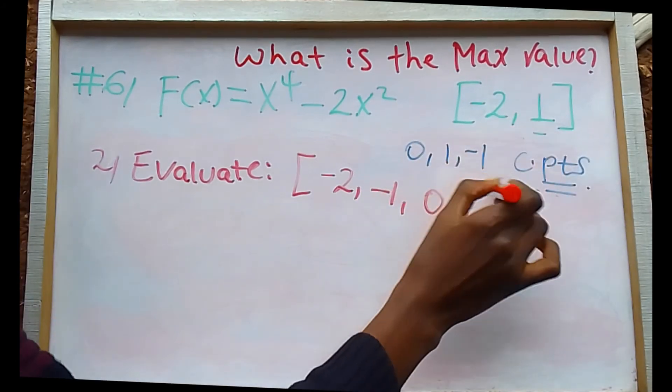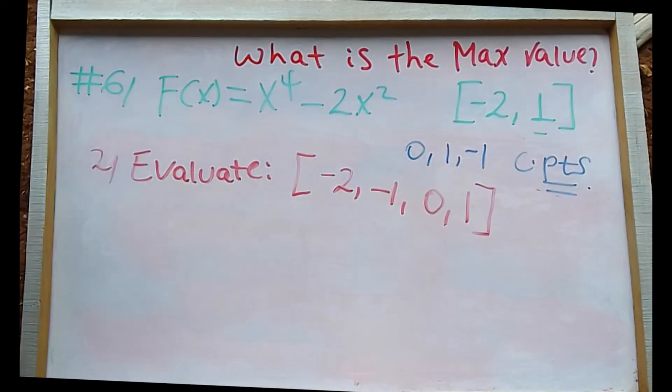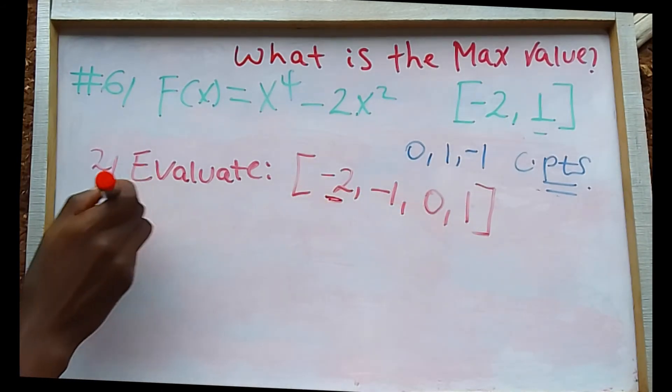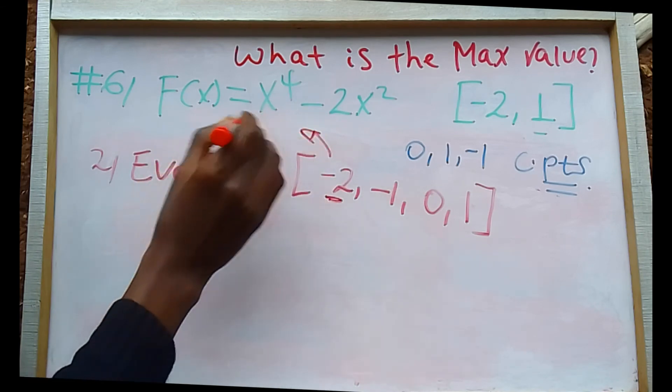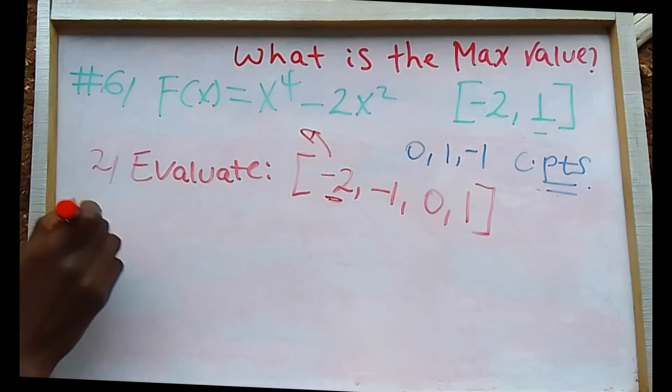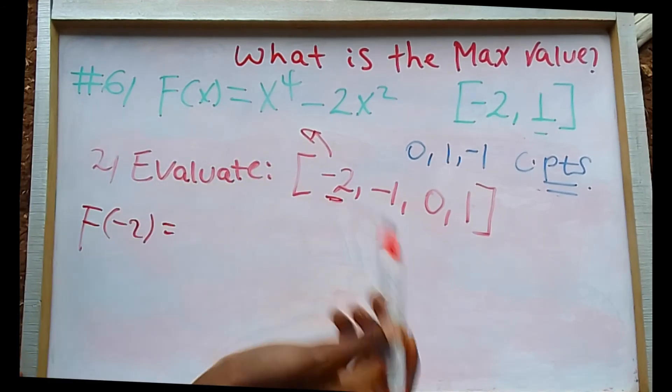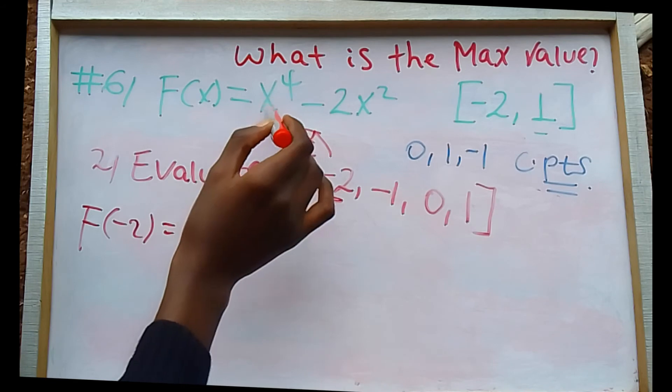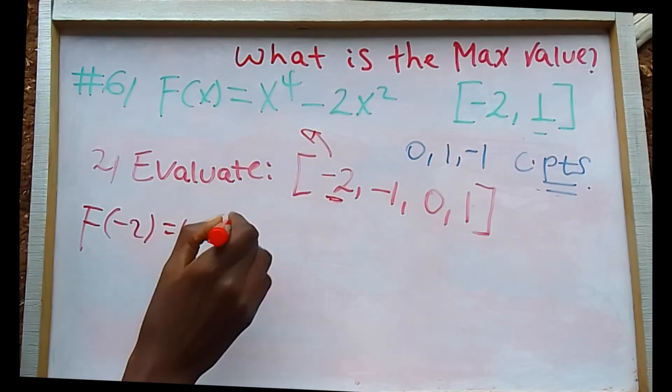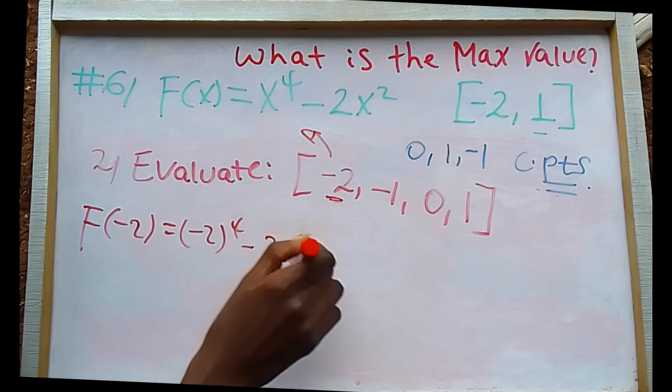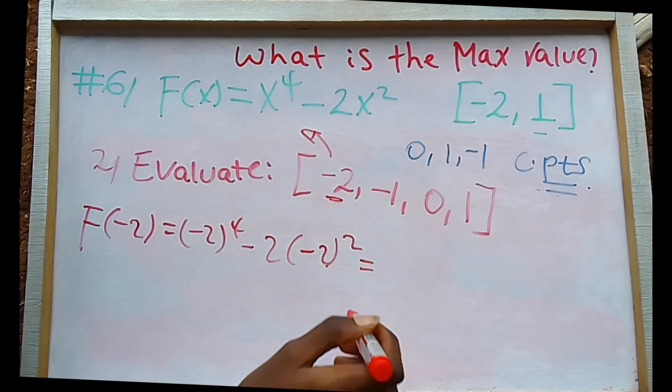Now we need to evaluate at these points. The boundary points are minus 2 and 1, plus the critical points minus 1, 0, and 1.